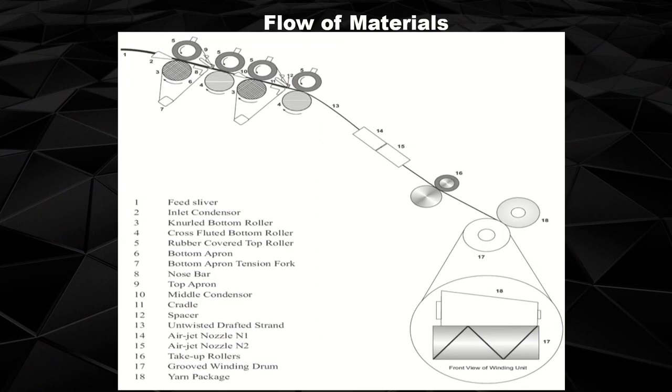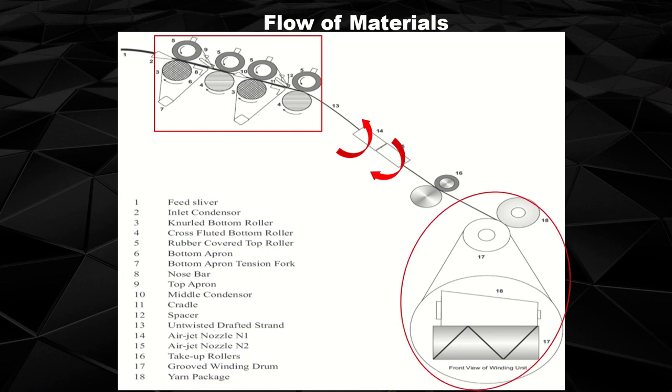Flow of material through the air jet spinning system includes drafting zone, twisting zone, and winding zone. The drafting zone consists of a 4-over-4 drafting system. After drafting, the twisting zone is very important for air jet spinning. The twisting zone consists of one or two nozzles. In case of two nozzles, both nozzles move in opposite directions to each other.